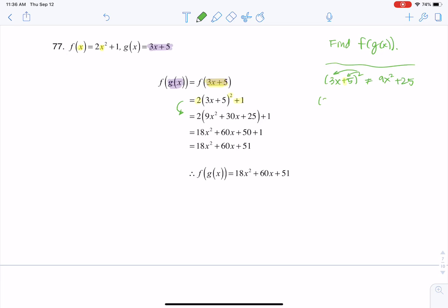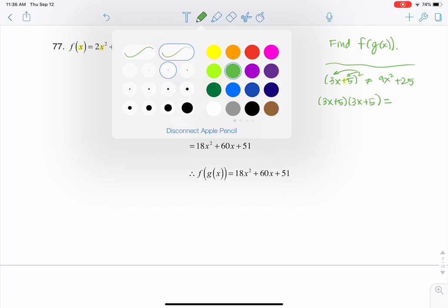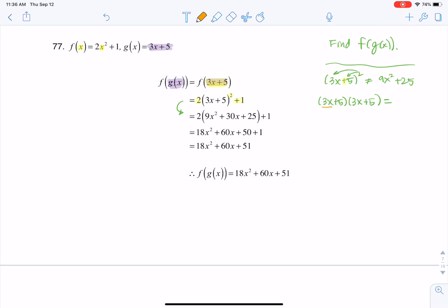So really what I need to do is take a look at 3x plus 5 times 3x plus 5. Now we could foil this, but I'm going to just double distribute to show you how that works. So when I say double distribute, what I'm going to do is send 3x to 3x plus 5.